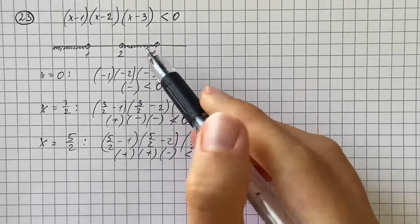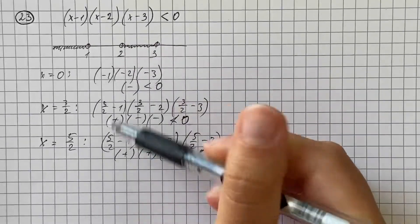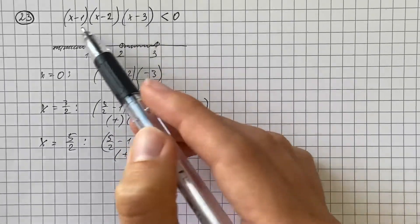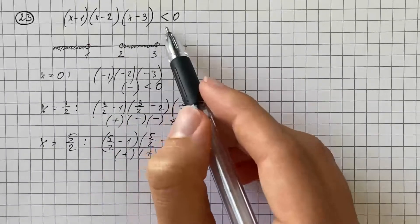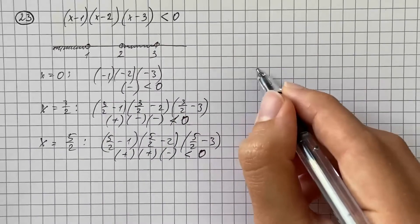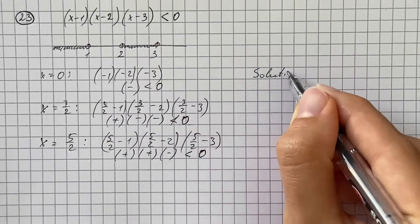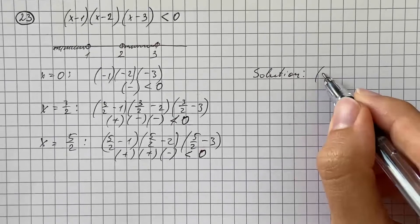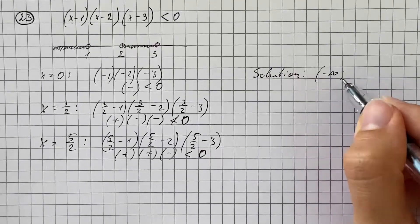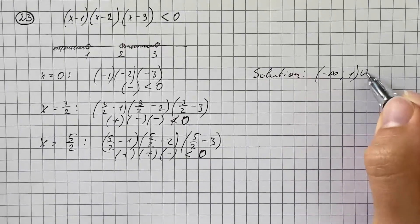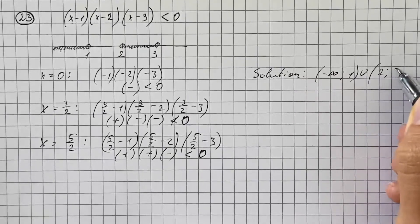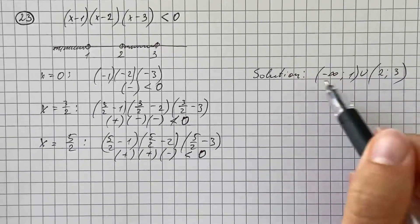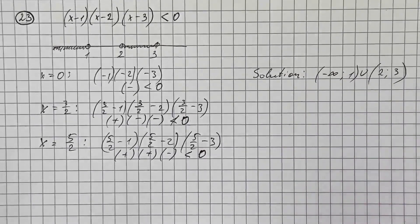The last number we check is x equals 4. Substituting gives positive times positive times positive, which is greater than 0, so it does not satisfy our inequality. The solution set is from negative infinity up to 1, union from 2 up to 3. We use parentheses because we are not including those endpoint values.